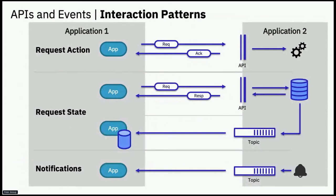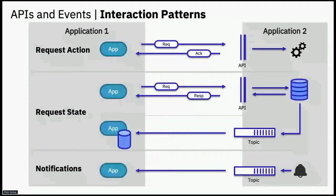Let's move on to the request state pattern. Here we are requesting some data from a remote system, such as: tell me the account balance, where is my order, or what is the address of a specific customer? This is an interaction where we are requesting something from a remote system and expecting a response back. This is another very common pattern and it's very well matched for a synchronous API, where those remote systems surface the data of interest to the calling application.